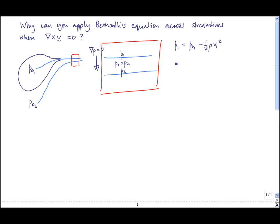And that P2 is equal to P02 minus one half rho v2 squared, where that's the speed on the bottom streamline.